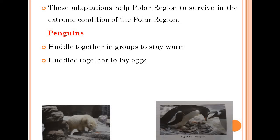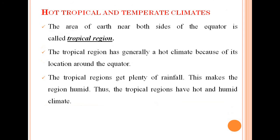Some other examples of animals that live in extremely cold climates are the arctic fox, Canadian lynx, and arctic hare. Now, having discussed animals living in cold climates, we will move to hot tropical and temperate climates to see how animals adapt themselves there.